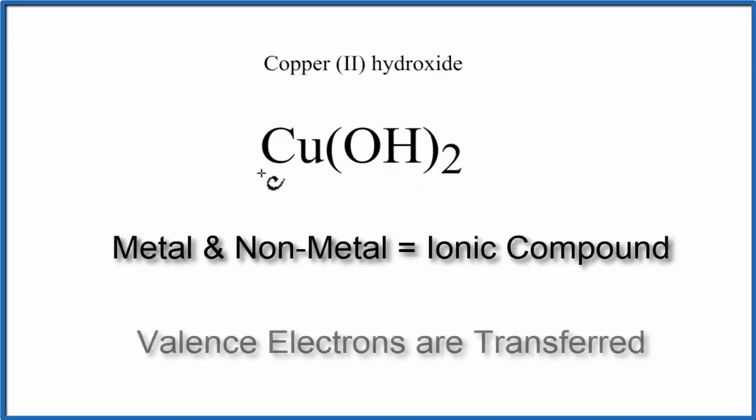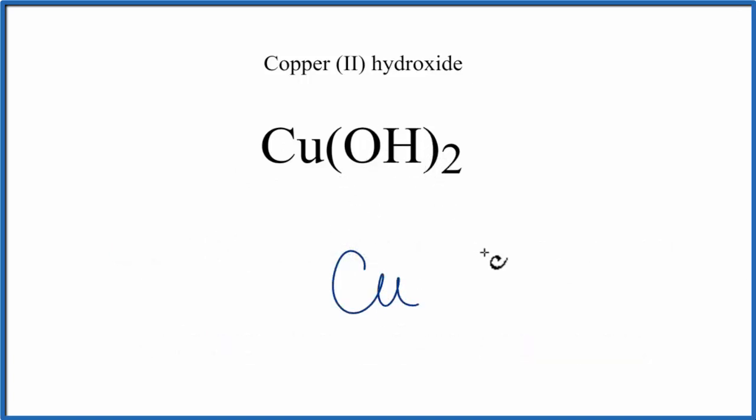The metal's going to transfer valence electrons to the non-metals. So we'll write Cu, and then we'll put an OH on either side. We can see from the name of this Roman numeral II, that tells us there's a 2+ charge on the copper.